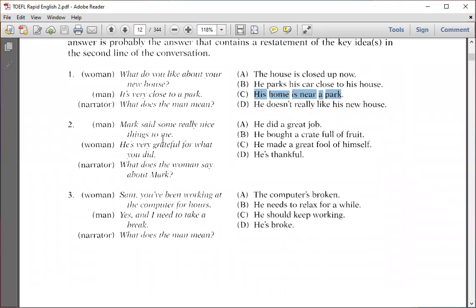Number two: "Mark said some really nice things to me. He's very grateful for what you did." What does the woman say about Mark? The correct answer is: He is thankful. Remember it's a restatement. Number three: "Sam, you've been working at the computer for hours." "Yes, and I need to take a break." What does the man mean? The correct answer is: He needs to relax for a while. 'Take a break' is restated as 'relax for a while.'